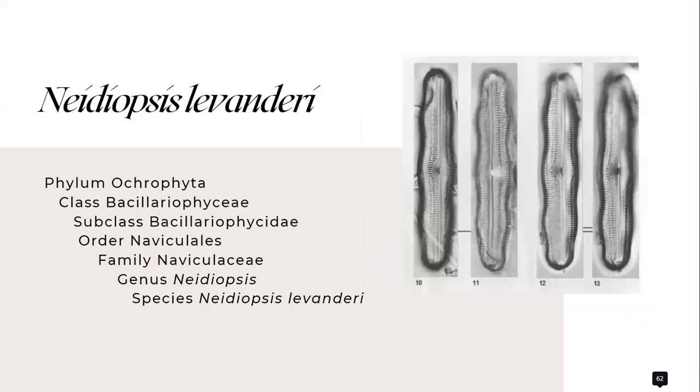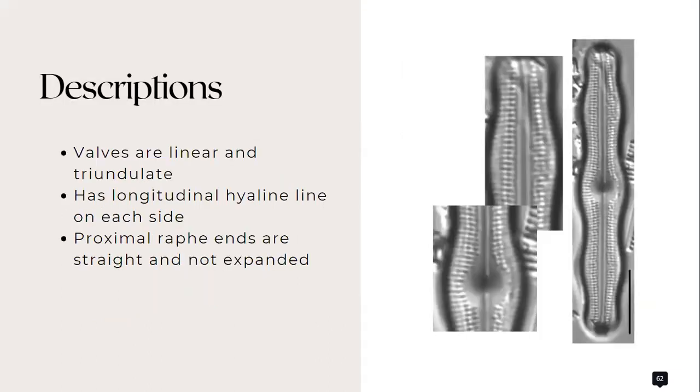Next we have is the Neidium levandarii which belongs to the family Naviculaceae. Its valves are linear and triangulate. It has a longitudinal hyaline line on each side. Its proximal raphe ends are straight and not expanded.